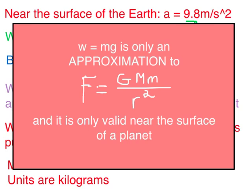Finally, I would like to conclude with a reminder that weight, written as mg, is only an approximation to the full force of gravity, Gm₁m₂ over r squared. And that approximation is only valid when the object is near the surface of a planet.